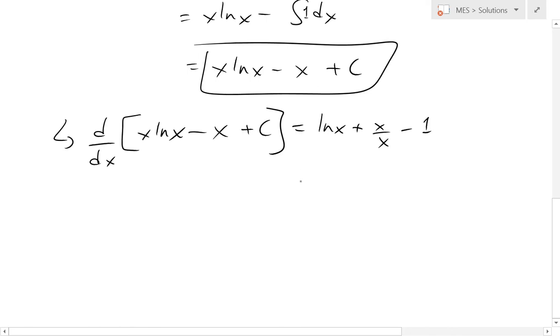So we're left with this. And now this equals ln x plus 1 minus 1. This cancels. That just equals ln x. So we've double-checked and this is the right answer.